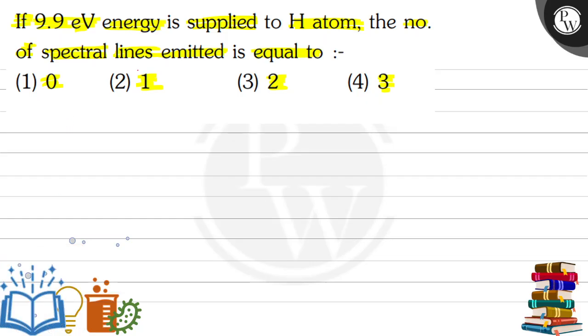Here in this question, number of spectral lines emitted - so our key concept is the hydrogen spectrum. This is hydrogen spectrum. Now, for hydrogen atom...